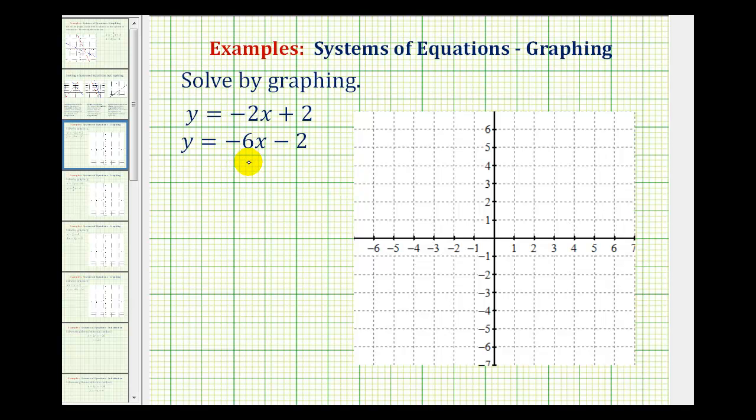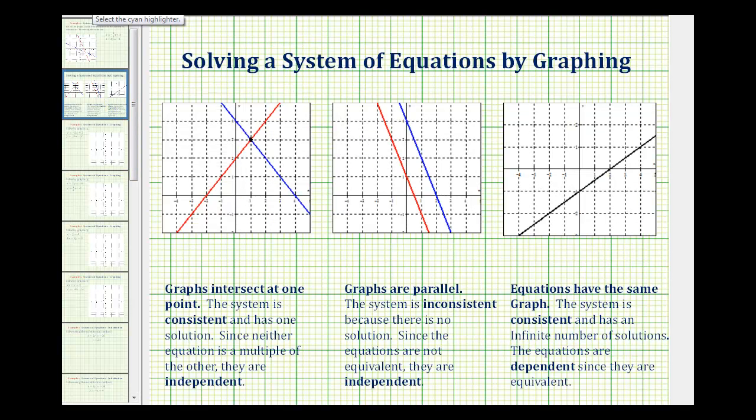Let's do a quick review of what can happen when you graph two lines on the same coordinate plane. Well, the first possibility we see here where the two lines intersect. In this case, we have one solution, which would be the coordinates of the point of intersection. This type of system is consistent, and the equations are independent.